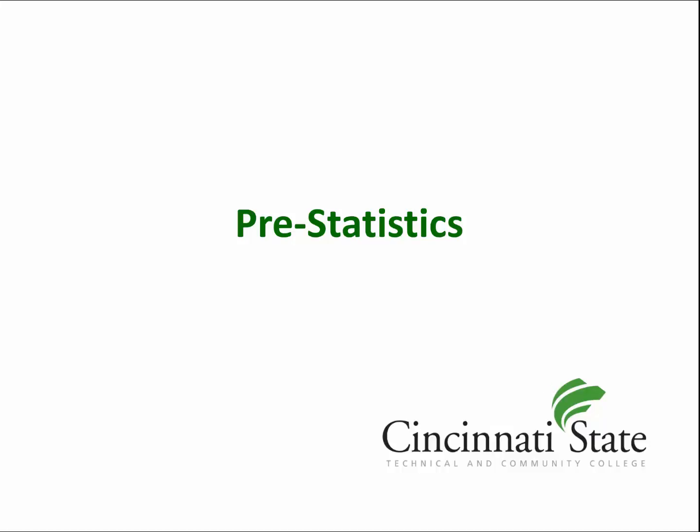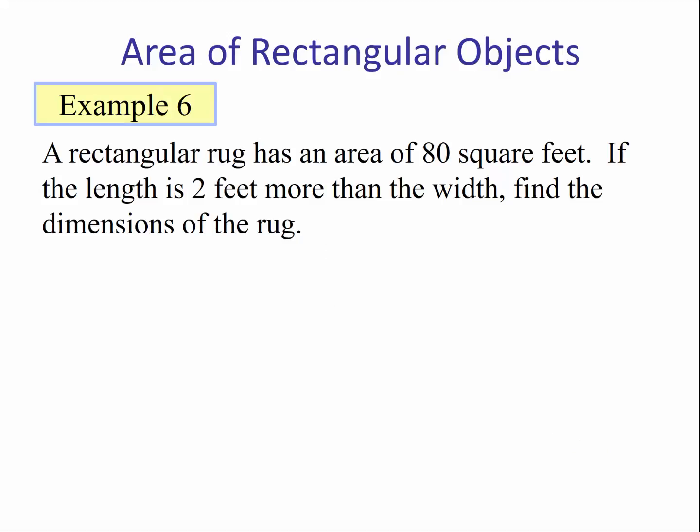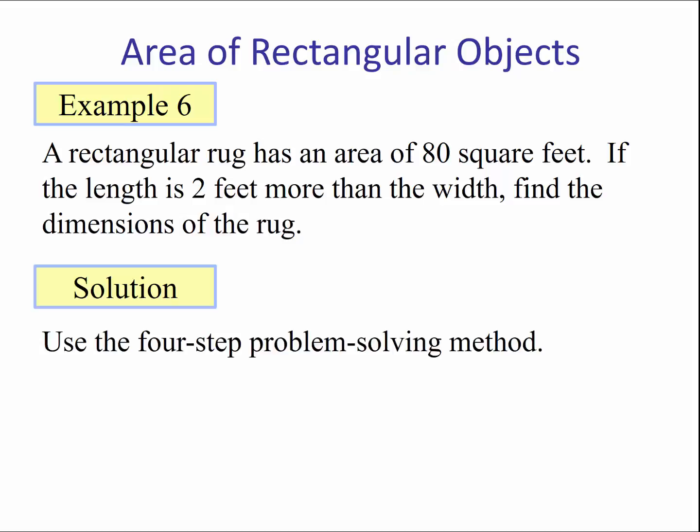Pre-statistics: make predictions with quadratic models, part 5, example 6. A rectangular rug has an area of 80 square feet. If the length is two feet more than the width, find the dimensions of the rug. Solution: for this problem, we will use the four-step problem-solving method.